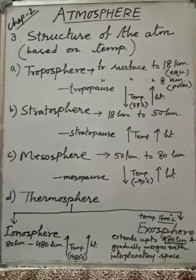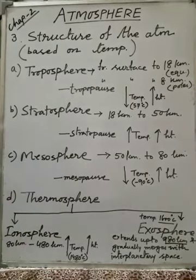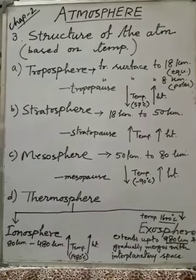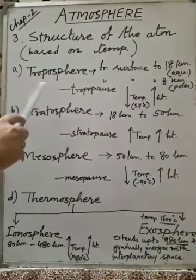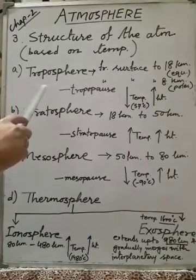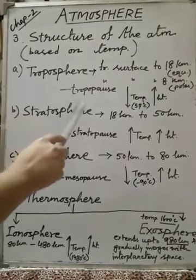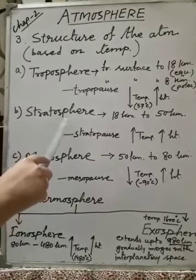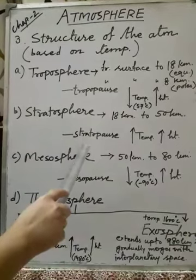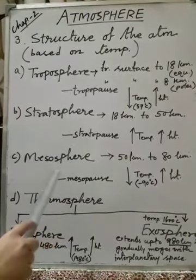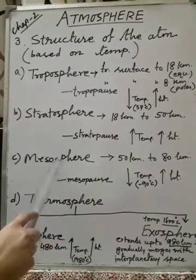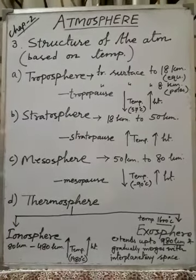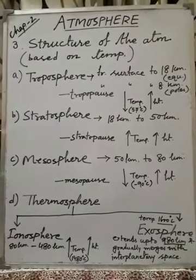These three thin layers - tropopause, stratopause, and mesopause - are called transitional zones. They also indicate the upper limit of each layer: tropopause is the upper limit of troposphere, stratopause is the upper limit of stratosphere, and mesopause is the upper limit of mesosphere. Like this way we are getting the whole structure of atmosphere.